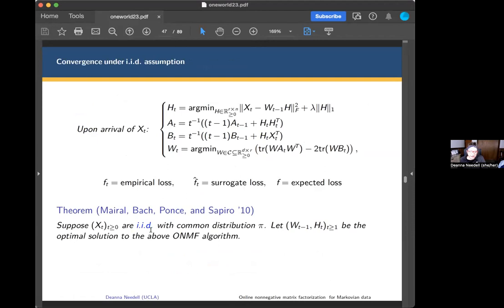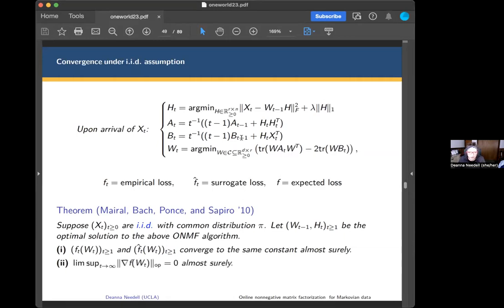Their theorem looked like this. They assumed an IID assumption on the data. They said, let W and H be the solution to this iterative optimization problem. Then you get some almost sure convergence for the surrogate function that you threw in the middle, and you get almost sure convergence of the gradient to zero.